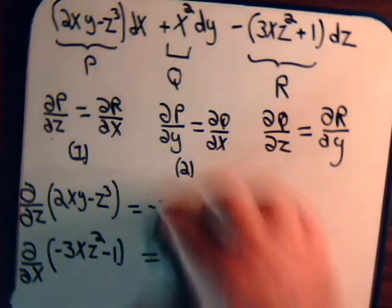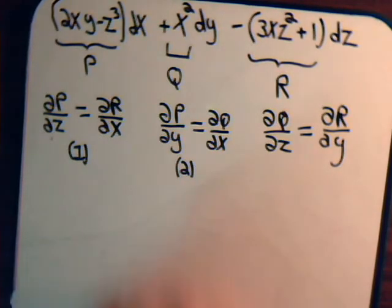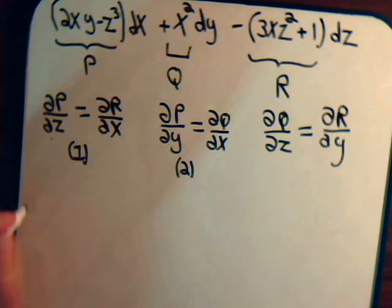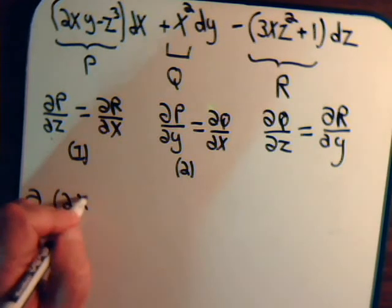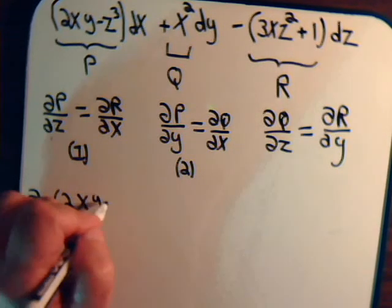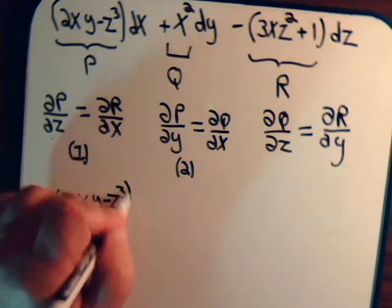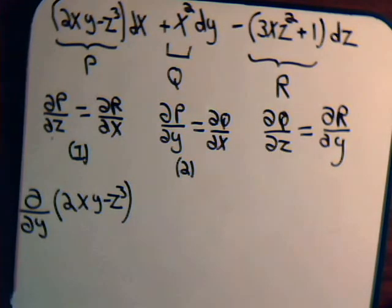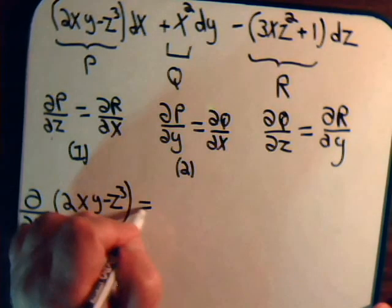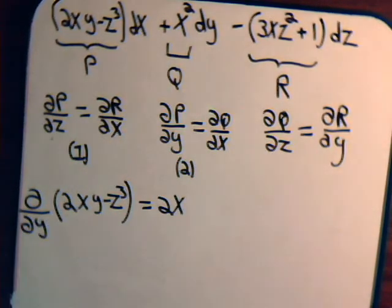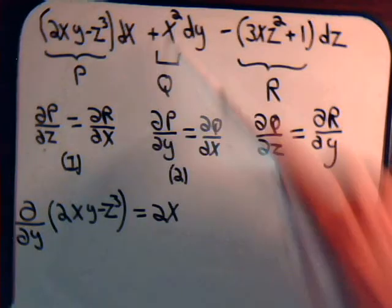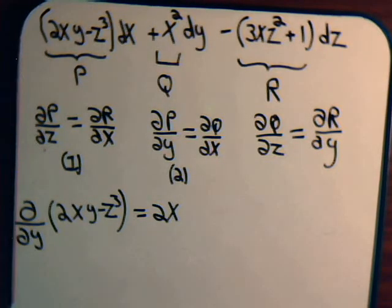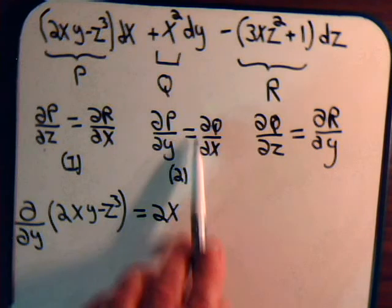For condition two, we take the partial with respect to y of p, which is 2xy minus z cubed. That gives 2x. Then we take the partial of q with respect to x — taking the partial of x squared with respect to x also gives 2x. So this equation is satisfied as well.